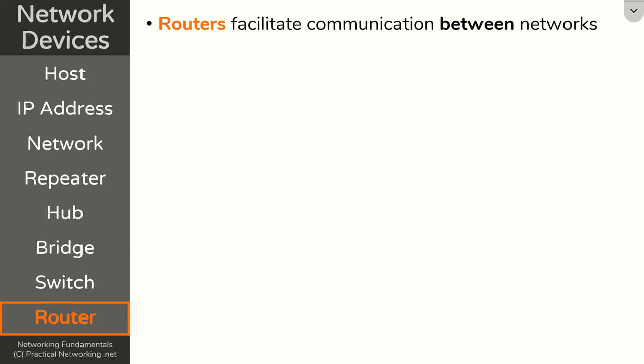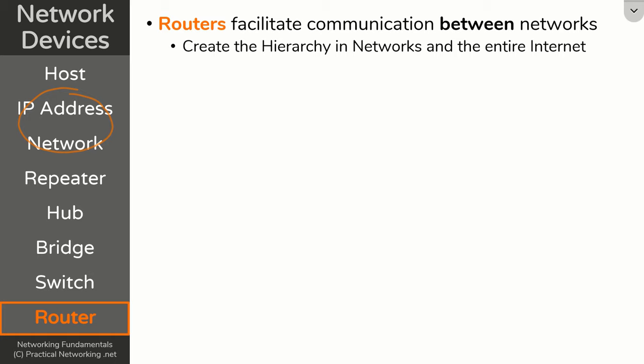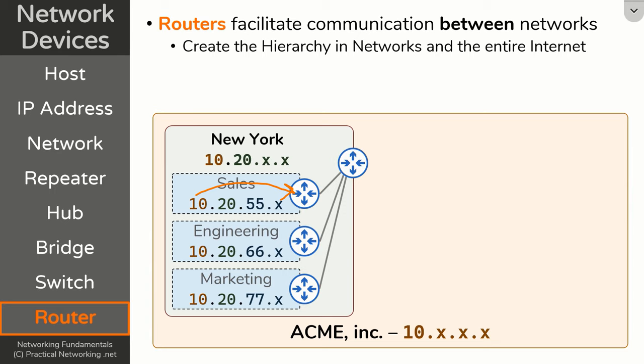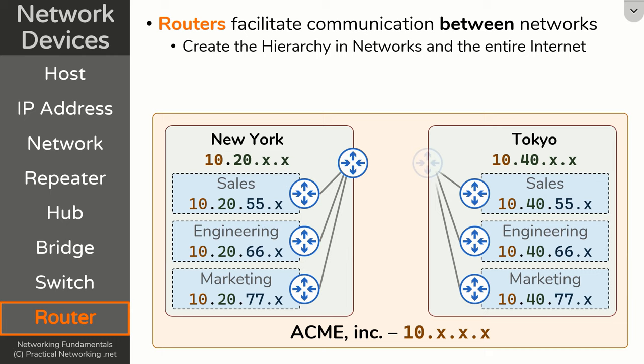Routers are actually what create the hierarchy in networks and IP addresses that we discussed in the prior sections of this lesson. For example, the New York office of the Acme Corporation has different teams, each with their own IP networks, each connected to different routers, and each of those routers is then connected to another router. If a host on the sales team wants to speak to a host on the marketing team, it's going to use its gateway — its closest router IP address — which will then send the packet to the next router, to the next router, and finally to the host on the marketing team.